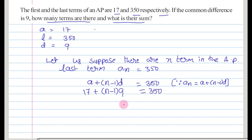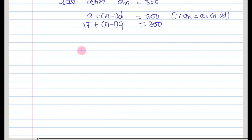Here 17 plus 9 into n, 9n, 9 into minus 1 minus 9 is equal to 350. Now 17 minus 9, that is 8, so 9n plus 8 is equal to 350.